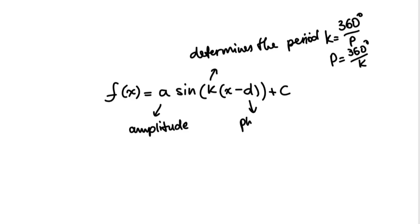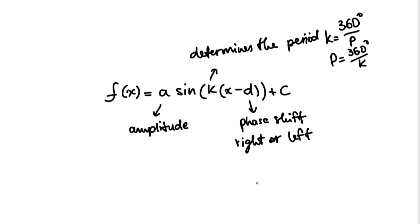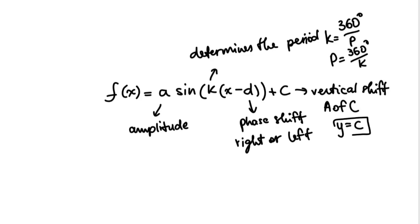D is a phase shift horizontally. The phase shift can be to the right or to the left, and it is determined based on the original graph. For a sine function, the non-shifted graph starts at zero on the axis of the curve — it has to be a point on the axis when x is zero. For cosine, the relationship is zero-maximum when there is no shift. C is a vertical shift, and it determines the axis of the curve. The equation of the axis of the curve is y = c.